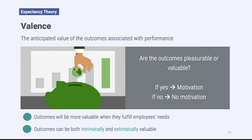Outcomes can be both intrinsically and extrinsically valuable. Intrinsically valuable outcomes are things that make us feel good internally — feeling proud, feeling accomplished, having self-confidence, or finding the work itself enjoyable. Extrinsic outcomes are things that are given to us externally, such as getting a promotion, receiving a bonus, having your boss praise you in front of everybody, or being named employee of the month. All of those are external outcomes or rewards — they're not coming from inside ourselves but from some outside force.